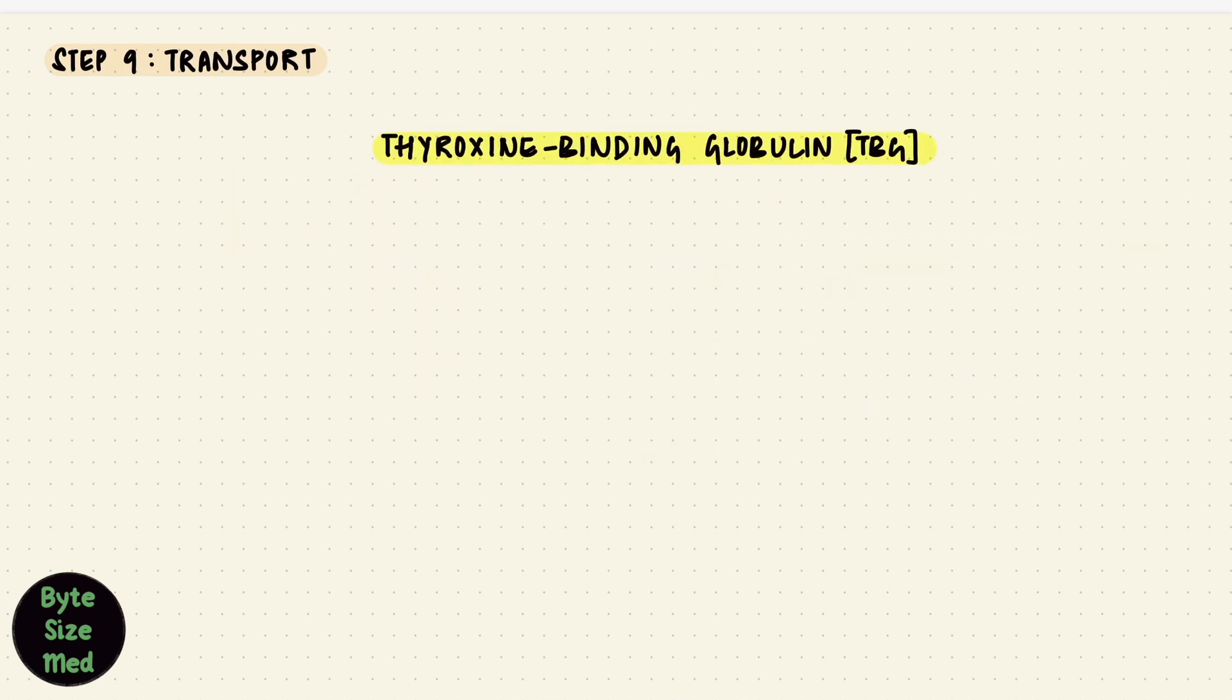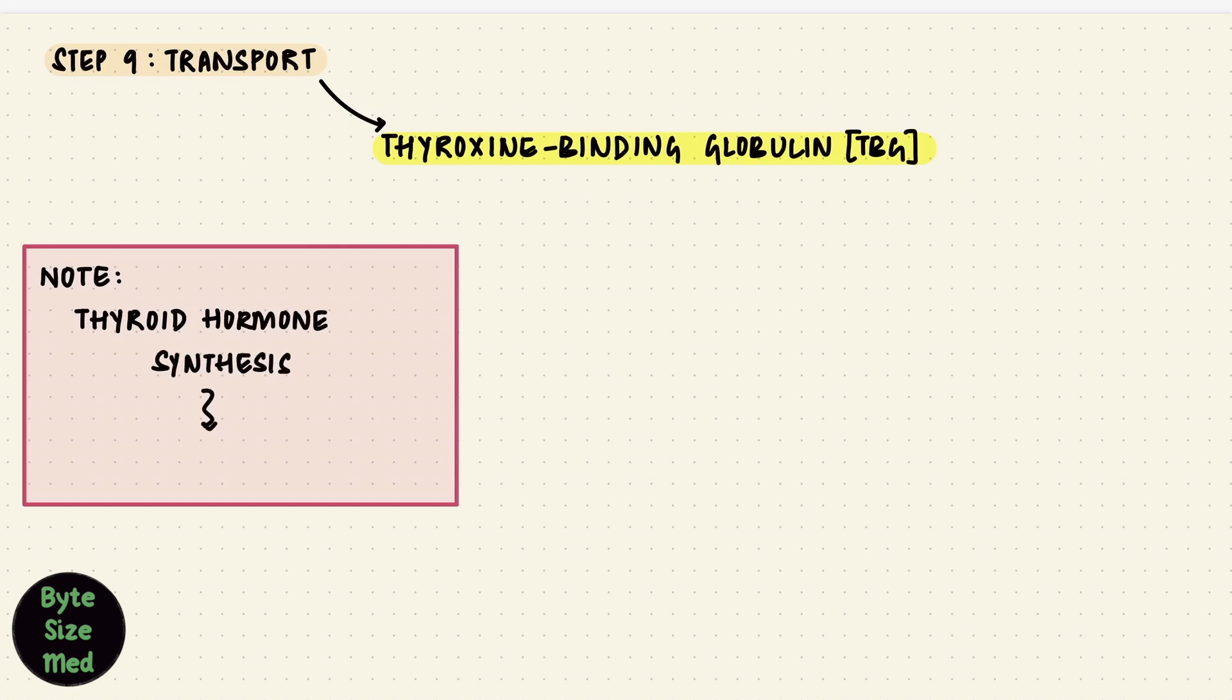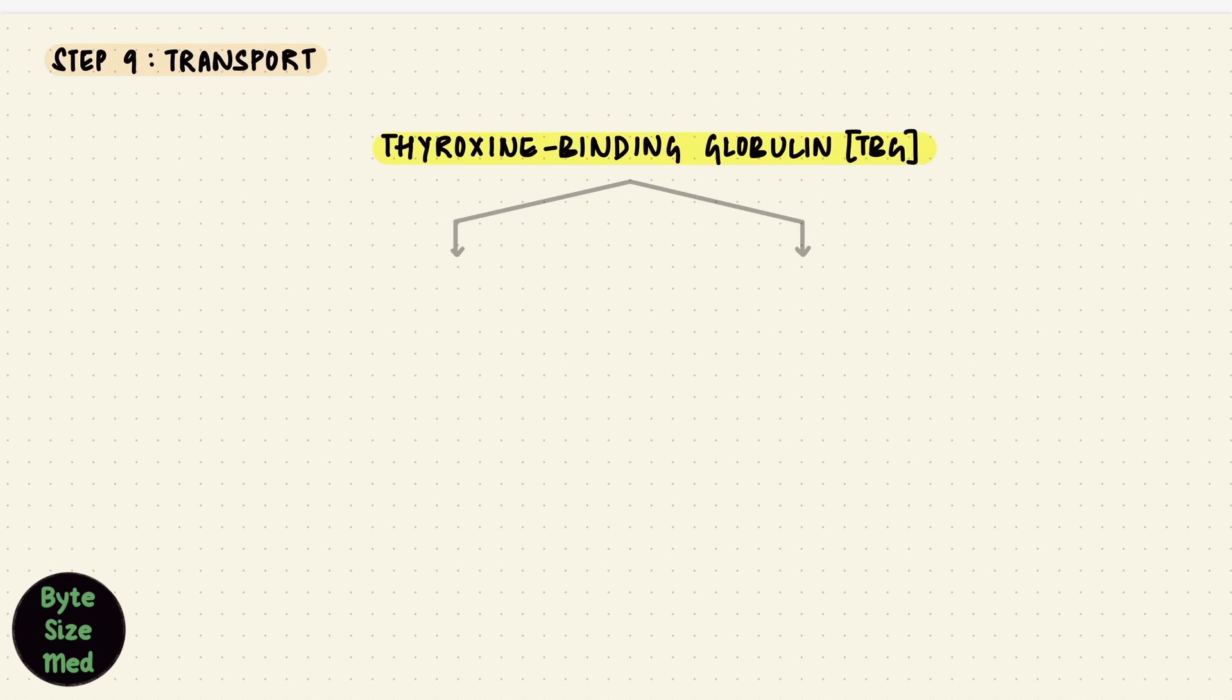Side note here, this is the thyroxine binding globulin, TBG, which is a transporter. The backbone for hormone synthesis that we saw earlier, that's thyroglobulin, TG. They sound very similar, but it's important that you note the difference between the two. But very simply, if the levels of TBG reduce, the amount of free hormone goes up. If there is more TBG, the amount bound goes up and free hormone levels come down. But once they reach the target cells, it's actually T3 that's going to be more active than T4. Most of the hormone produced by the thyroid gland, however, was T4. And we need more T3.